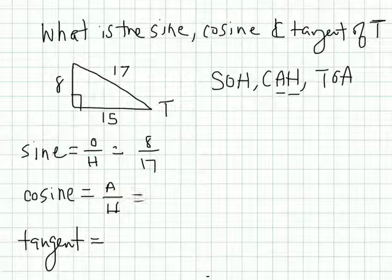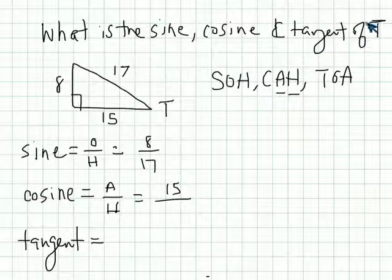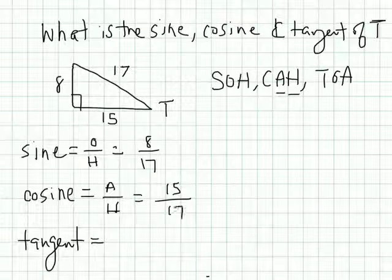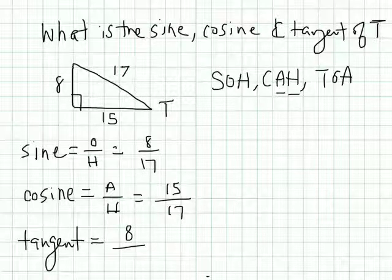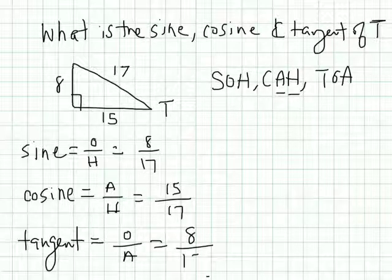So if I'm adjacent over hypotenuse. Again, so adjacent is going to be 15. We're looking, the leg next to T. What is the sine cosine tangent of T? We're looking at starting with angle T here. That's 15 over the hypotenuse, which is 17. And lastly, our tangent is the opposite. So the opposite is 8. Opposite over adjacent. That would be 8 over 15.